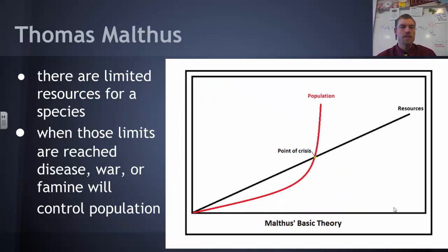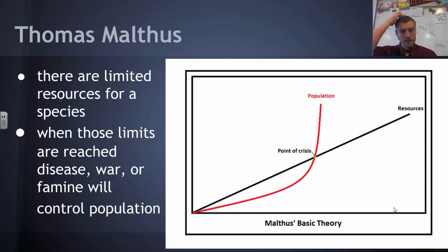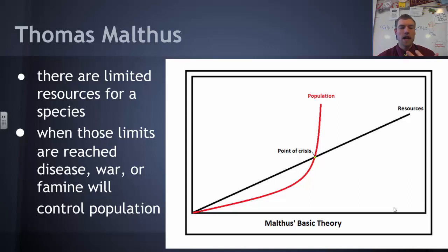The next figure is Thomas Malthus, who was studying populations and how they change. He was looking at human populations, though it applies to others as well. His observations were that when you have a limited amount of resources — which there always are — at some point you'll reach the limit of those resources. Those resources can only sustain a certain population size, and when the population exceeds that level, things like disease, war, and famine occur as people compete for resources, pulling the population back in check.